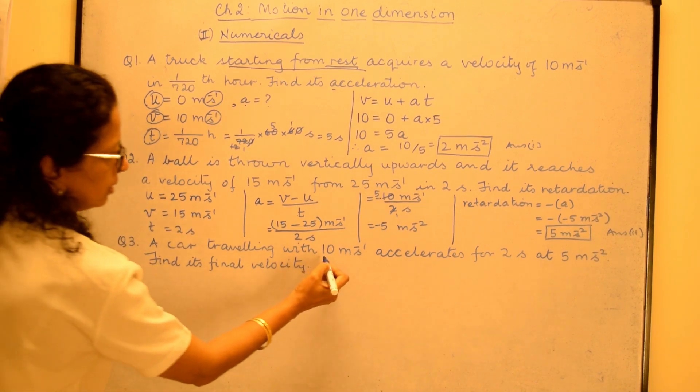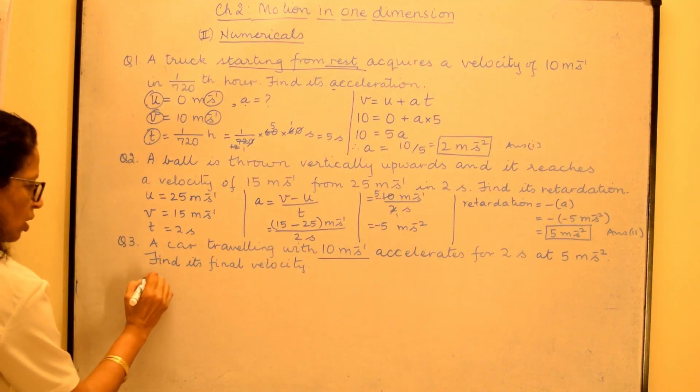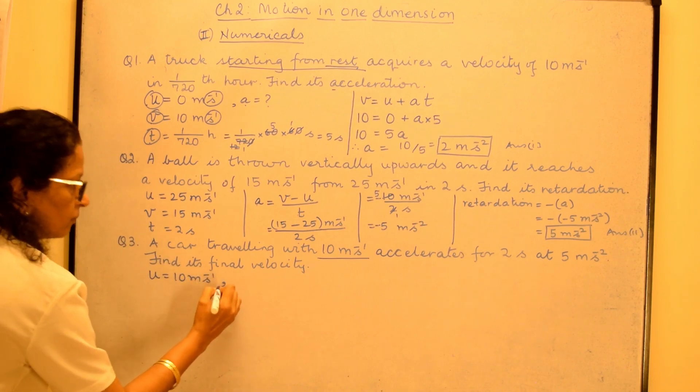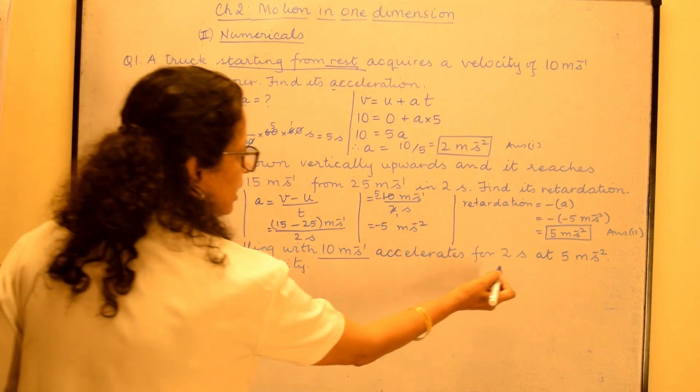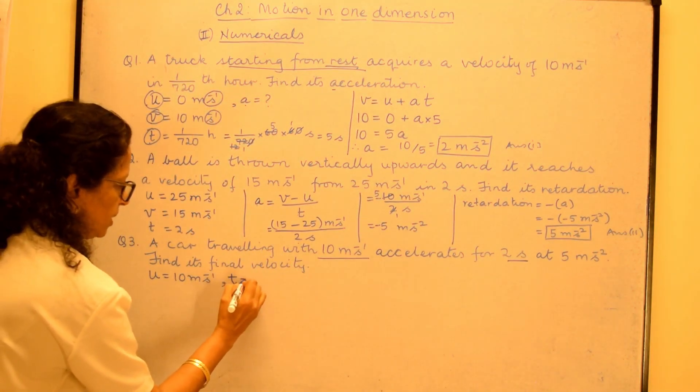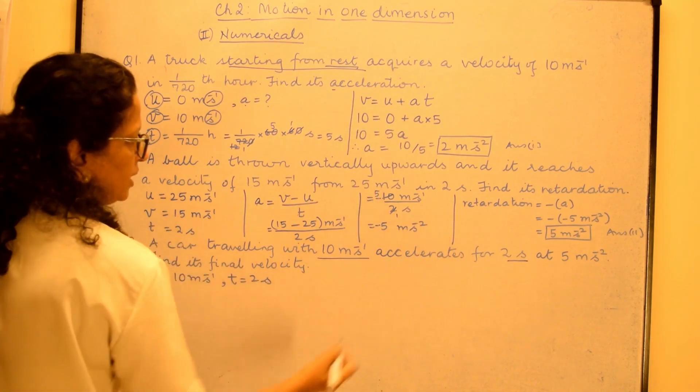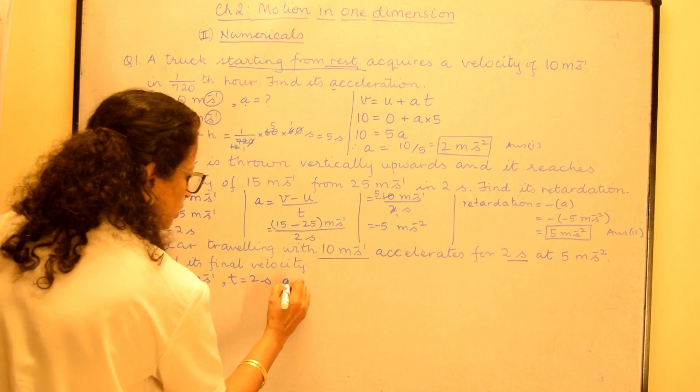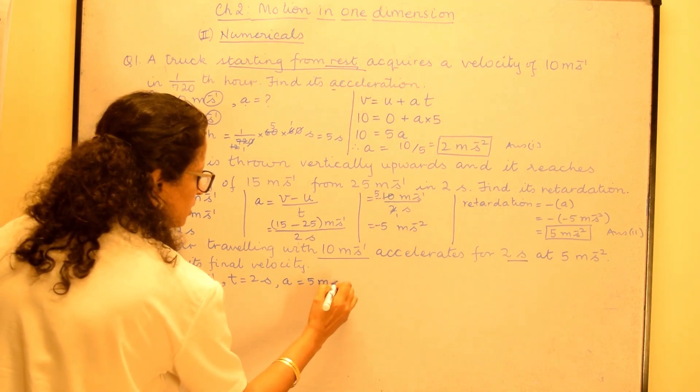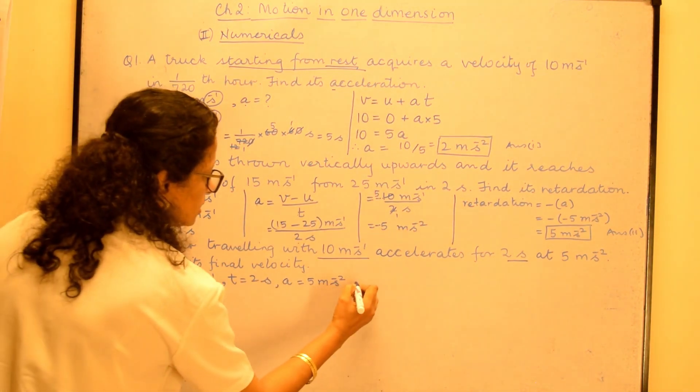A car is travelling with 10 meter per second. So that becomes the initial velocity. So u is equal to 10 meter per second. And it accelerates for how much? 2 seconds. So that is your time equal to 2 seconds. And at 5 meter per second square. So they have given you the value of acceleration which is 5 meter per second square. And now they are asking you find the final velocity. That is v equal to how much?